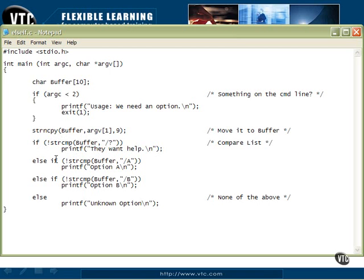Else if, which is why we're here. Else if not stringCompare buffer slash A, then they ask for option A. Else if not stringCompare buffer B, they ask for option B. Else, we don't know what they asked for. They put something in the argument that didn't work. And that's the unknown option.